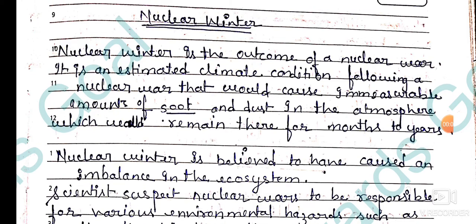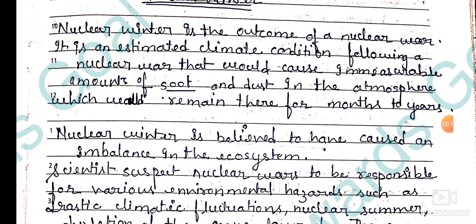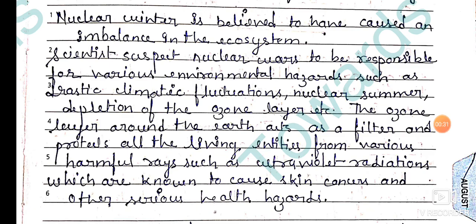Hi everyone, welcome back to my YouTube channel. Today's topic is nuclear winter. Nuclear winter is the outcome of nuclear war — it is an estimated climate condition following a nuclear war that would cause a miserable amount of soot and dust in the atmosphere, which would remain there for months to years.